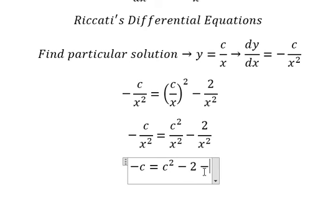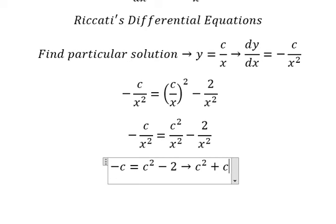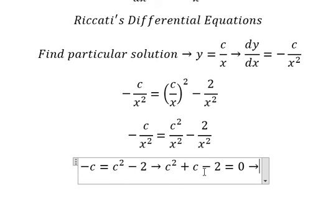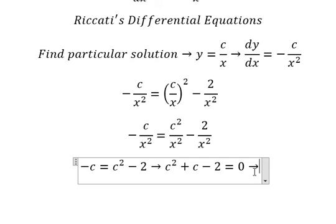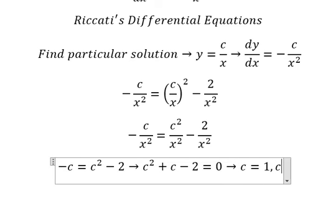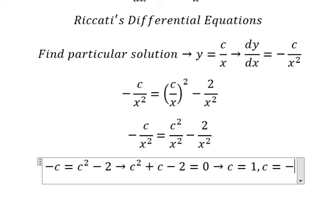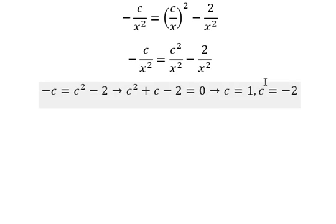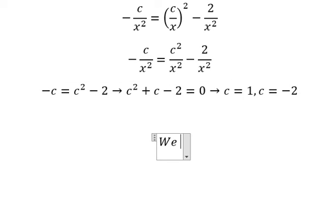Now we need to find the solutions of c. We get c equals positive one and c equals negative two. In this situation I will choose c equals one, and the particular solution becomes y equals one over x.